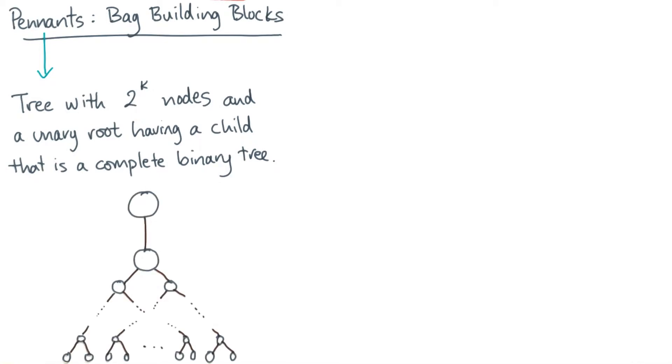Okay, that was a lot of words. Here's a picture. This pennant has a root and one child. And notice that the child is a parent of a complete binary subtree.